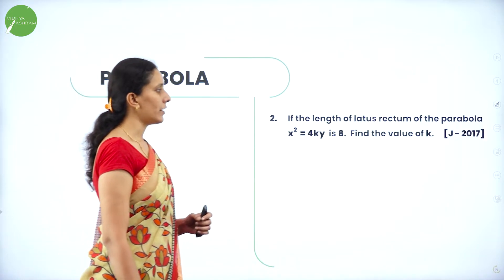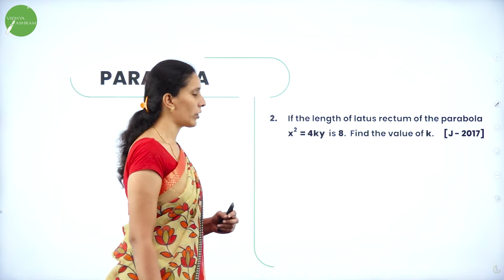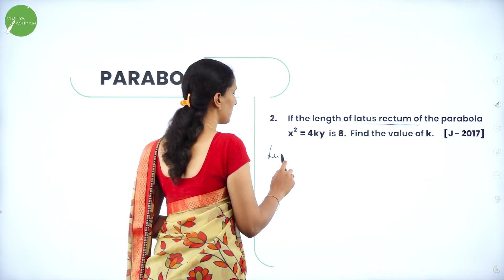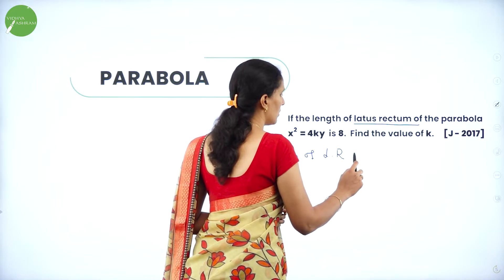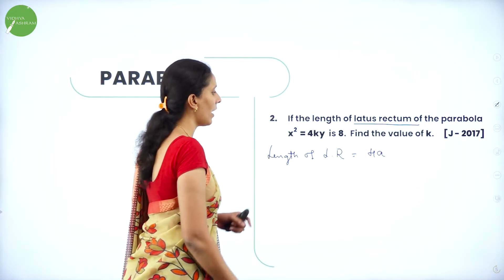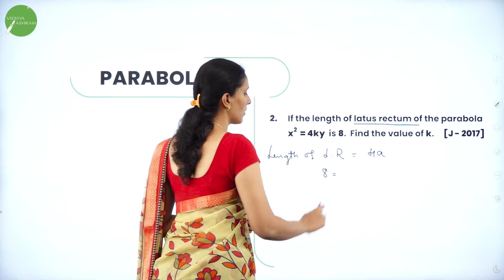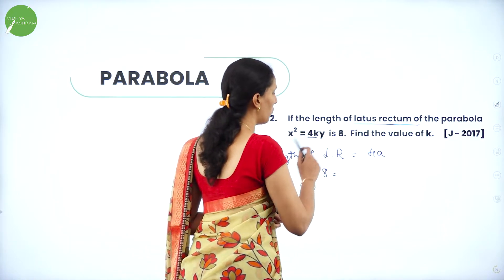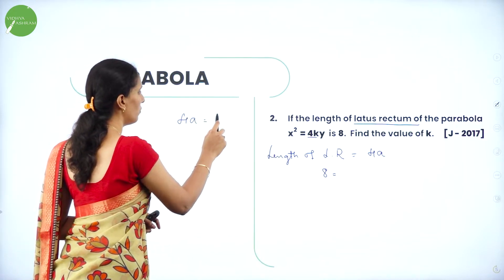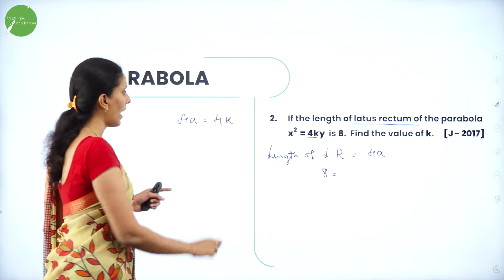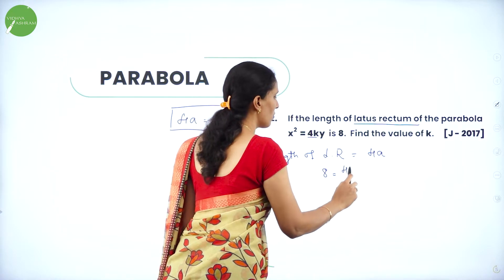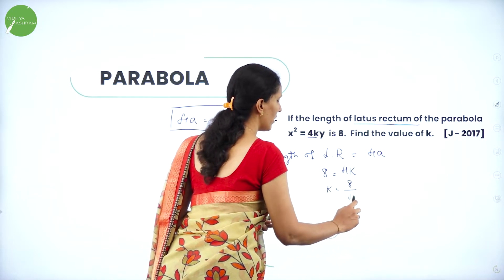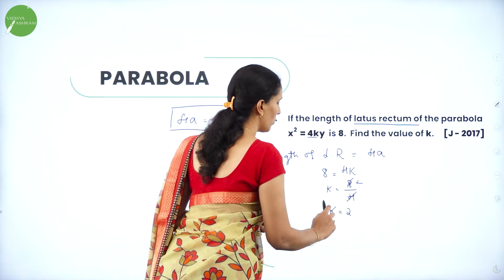Next one-mark question: If the length of the latus rectum of the parabola x² = 4Ky is 8, find the value of K. The length of the latus rectum is 4A, and here 4A = 4K. Since 4K = 8, we get K = 8 ÷ 4, so K is equal to 2.